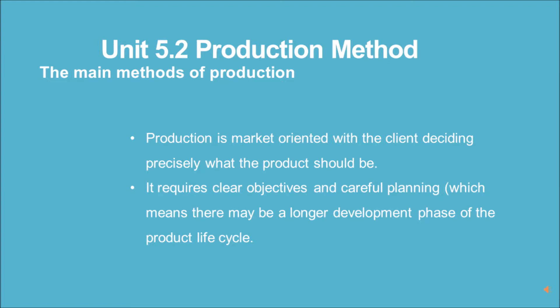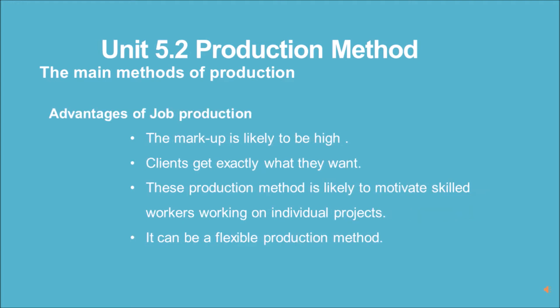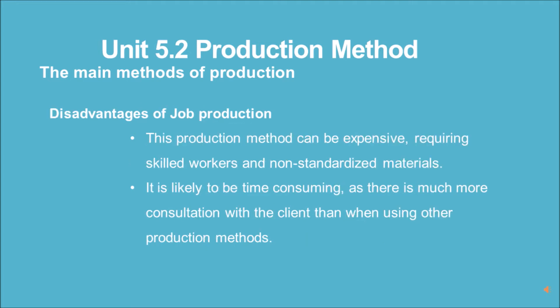Production is market-oriented, with the client deciding precisely what the product should be. It requires clear objectives and careful planning, which means there may be a longer development phase of the product lifecycle. Advantages of job production: the markup is likely to be high, clients get exactly what they want, and this production method is likely to motivate skilled workers working on individual projects.